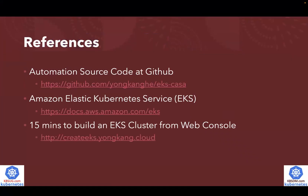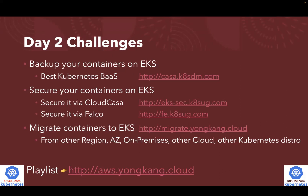Just to include a few reference links: all the automation code is available on my GitHub page. The second link is the official AWS documentation for creating an Amazon EKS cluster. The last one is a different video about how to build an EKS cluster from the web console. The day one task is easy with a managed Kubernetes cluster like Amazon EKS — but what about day two challenges? These include: how to back it up, how to secure containers on EKS, and how to migrate containers to EKS — from a different region, availability zone, on premises, or another cloud.